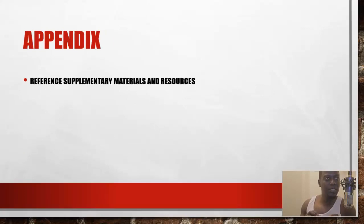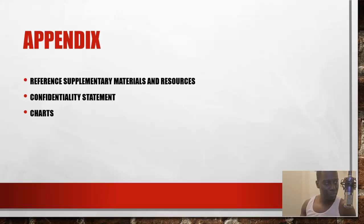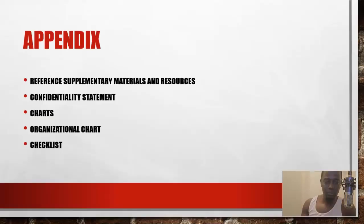The last section is your appendix. Here you reference supplementary materials and resources — your confidentiality statement can go here, along with organizational charts, different checklists, and so on. That's everything you need to include in your business plan. I hope this helped — tune into the next video.